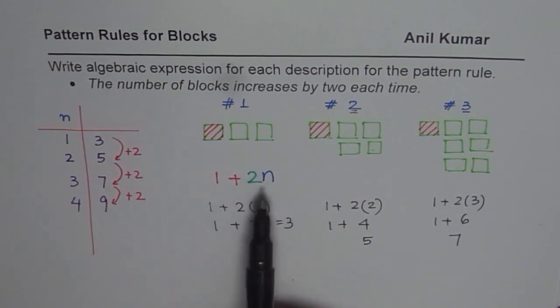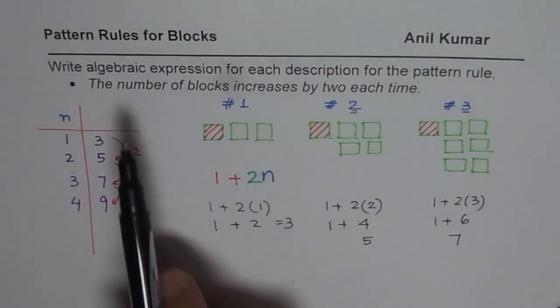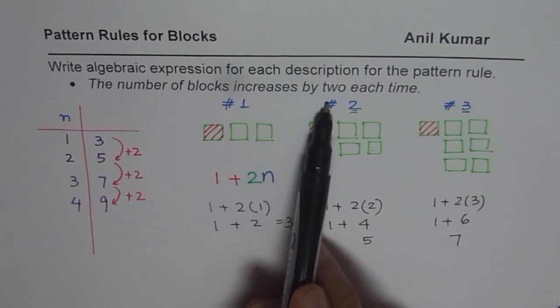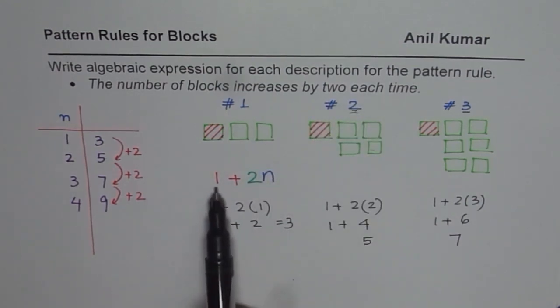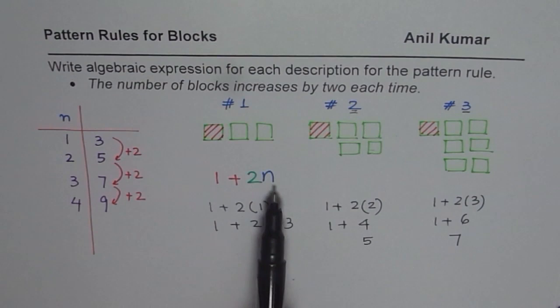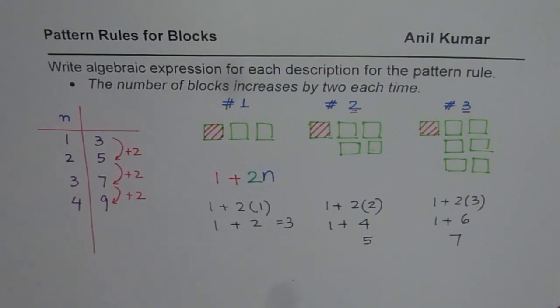So the algebraic expression which represents this particular description, the number of blocks increases by two each time, is one plus two n. And that is how you can get. So this is one way of getting the expression.